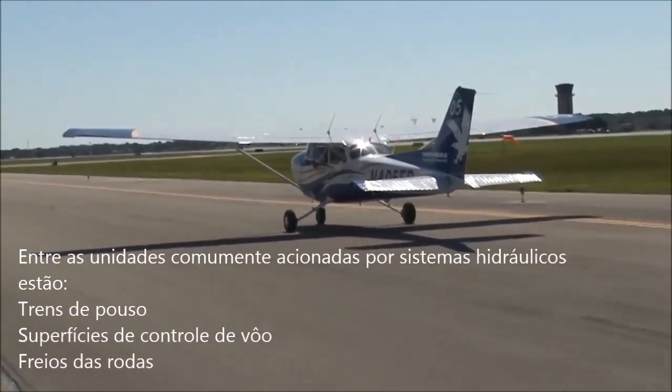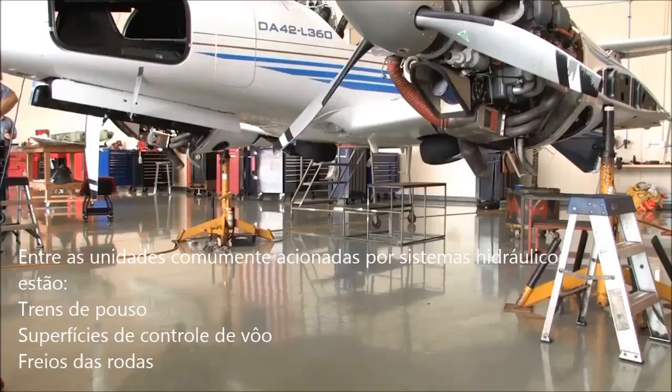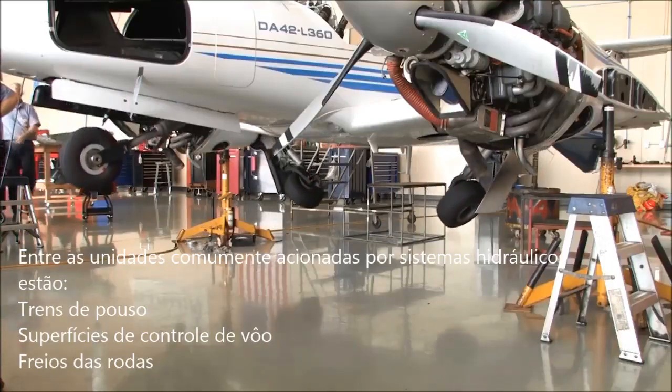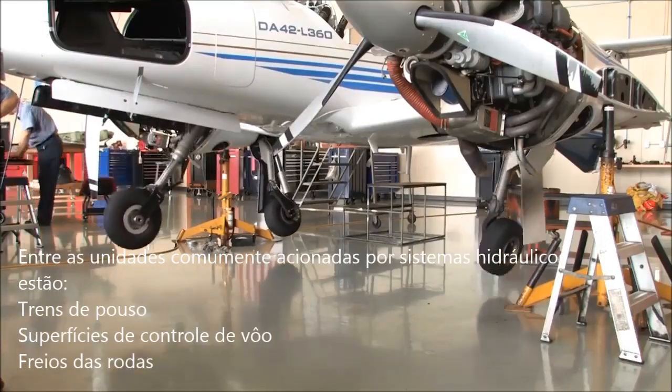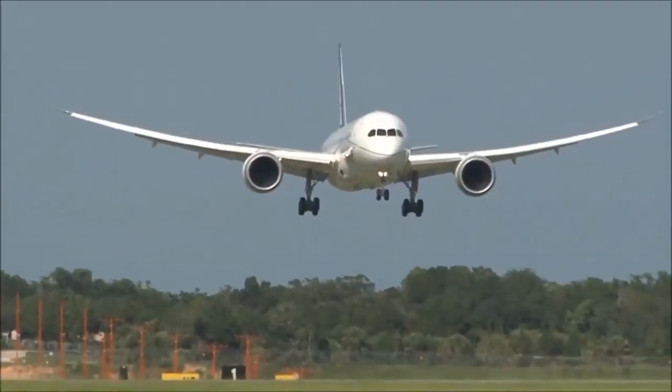In smaller airplanes, the hydraulic system powers the brakes to stop the airplane, extend and retract the landing gear, and change the blade angle on some constant speed propellers as previously discussed.